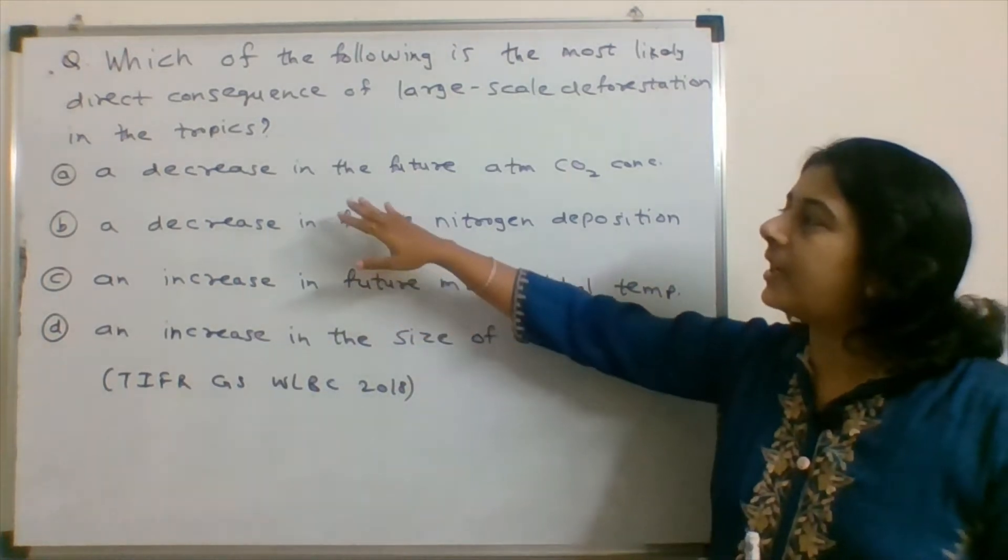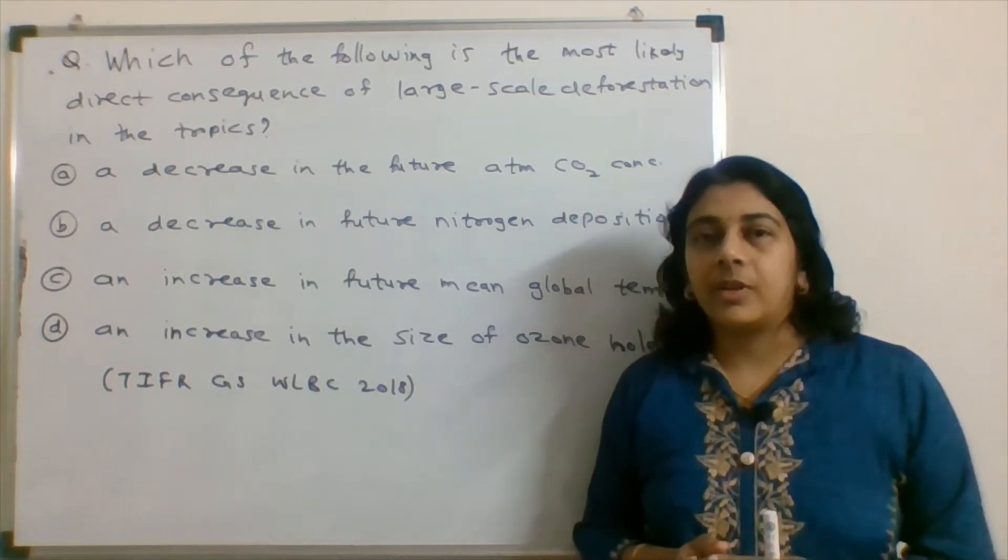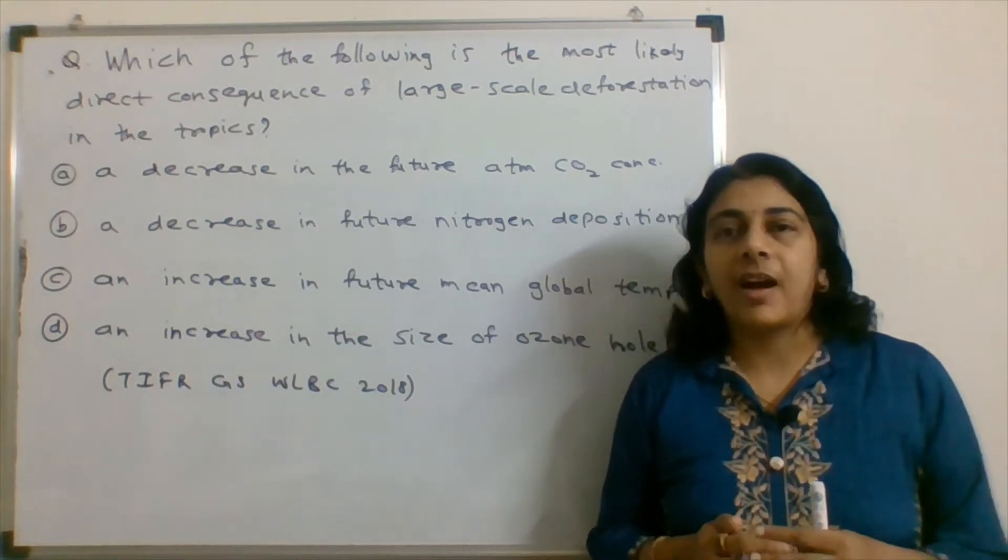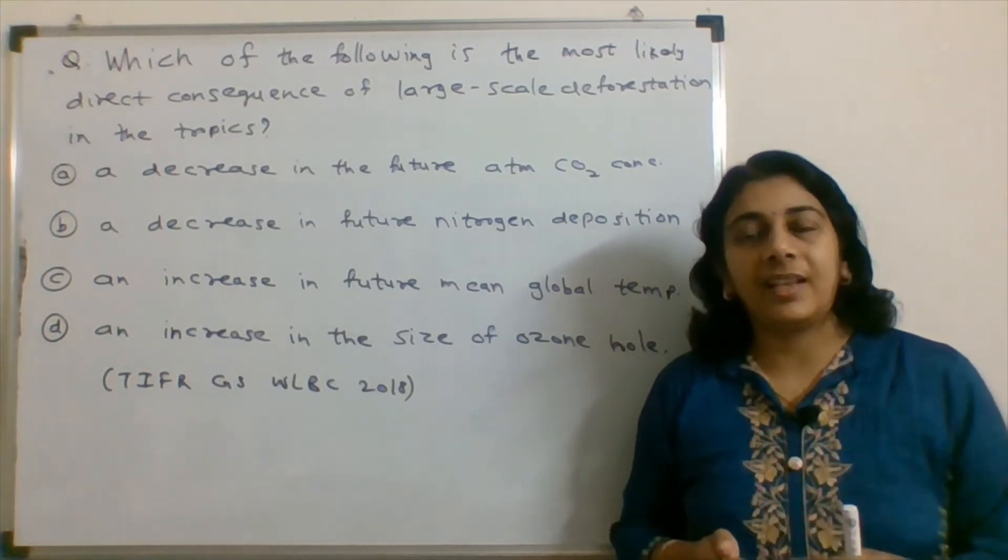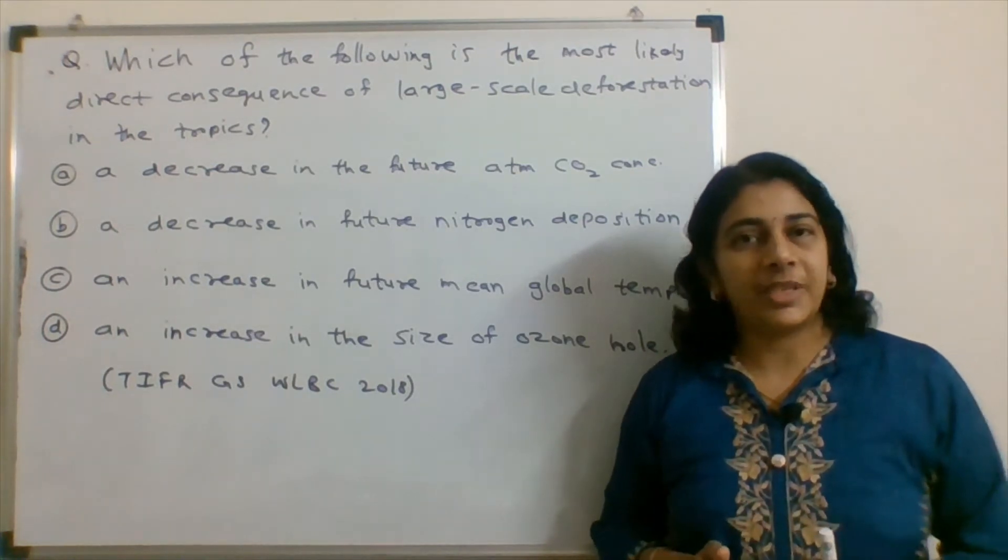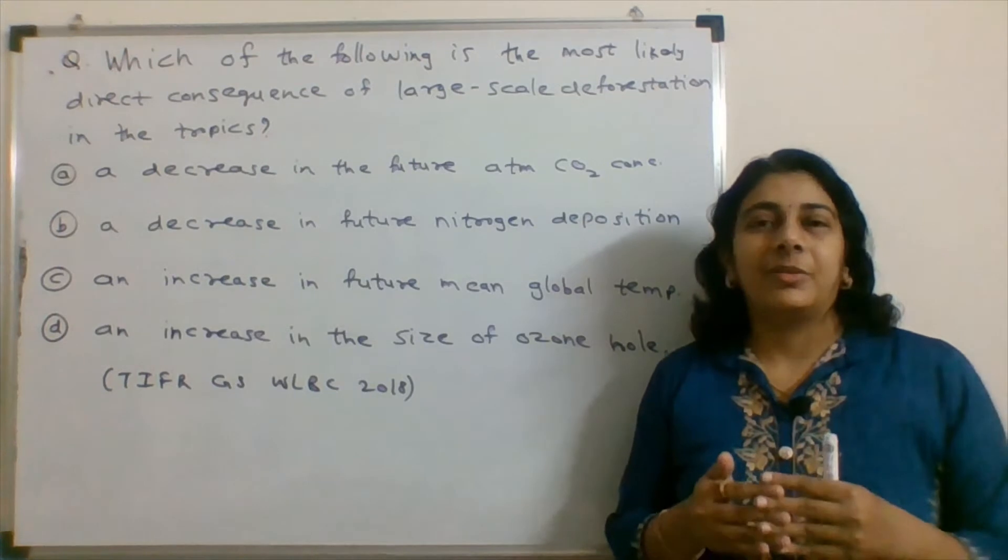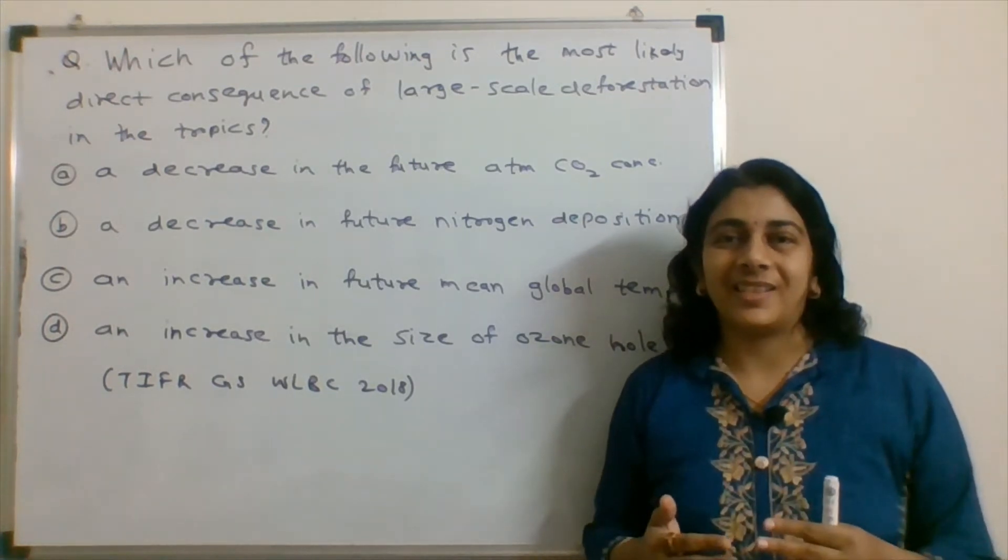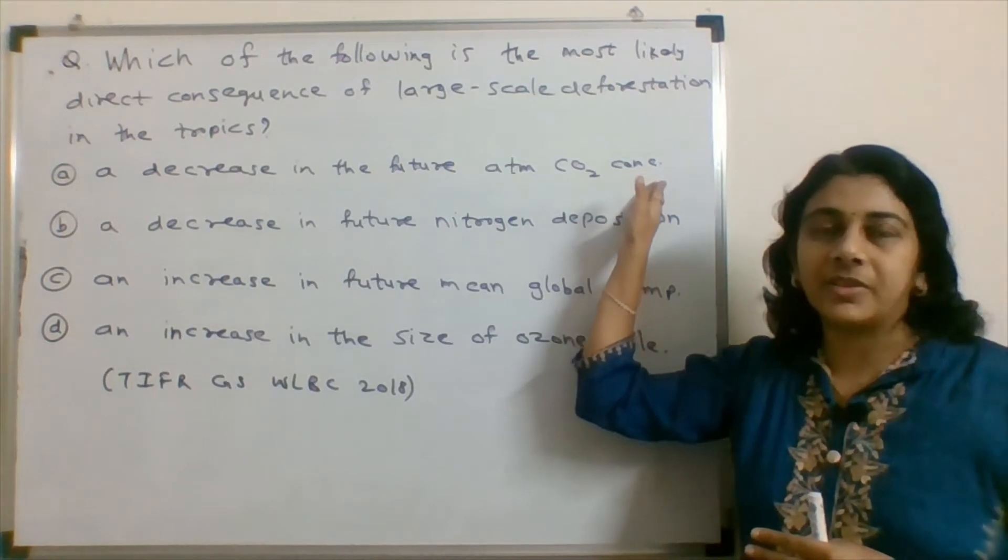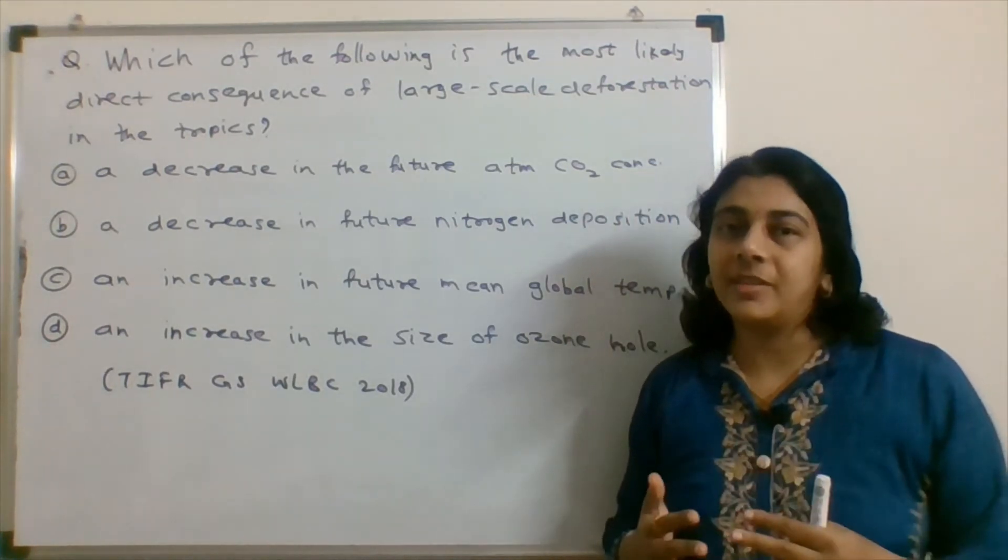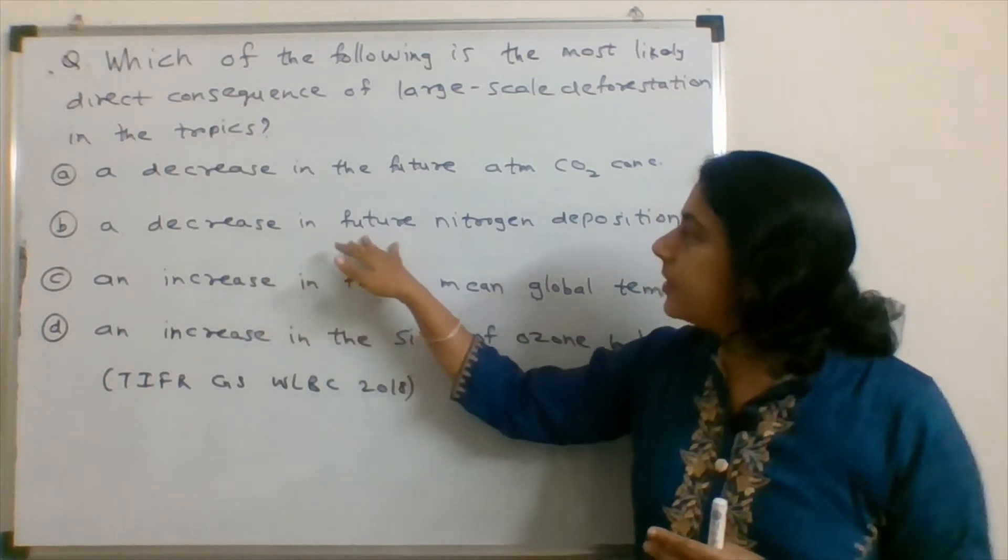The first option is a decrease in the future atmospheric carbon dioxide concentration. When deforestation occurs, plants are cut down. Plants take carbon dioxide from the atmosphere and create food through photosynthesis. When we do deforestation, plants are reduced, so carbon dioxide in the atmosphere will increase, not decrease.